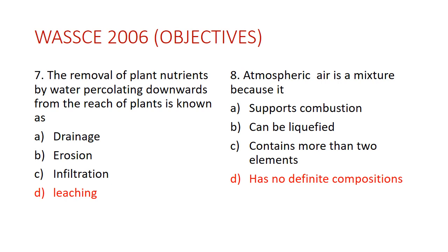Question eight: atmospheric air is a mixture because A) it supports combustion, B) it can be liquefied, C) it contains more than two elements, D) it has no definite composition. The answer is D — it has no definite composition. One characteristic of all mixtures is that they don't have a fixed composition. For example, atmospheric air varies in water vapor and carbon dioxide content, just as a drink recipe can vary in ingredients.